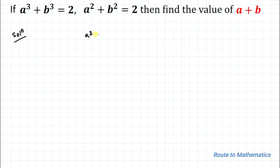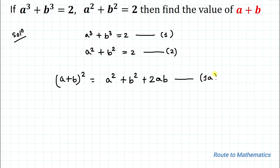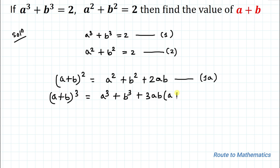Our first equation is a³ + b³ = 2, and our second equation is a² + b² = 2. We know the algebraic identity: (a + b)² = a² + b² + 2ab — let's call this equation 1a. We also know the identity for (a + b)³ = a³ + b³ + 3ab(a + b) — let's call this equation 2a.